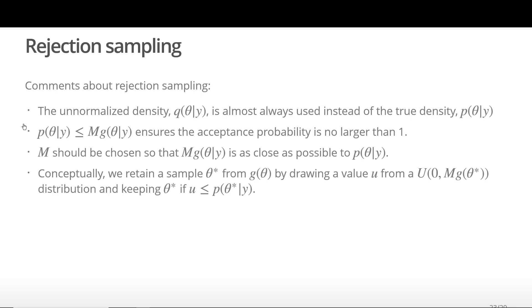When thinking about how to make the decision about whether a sample value theta star drawn from G should be retained, we draw a value U from a uniform (0, Mg(theta star)) distribution and keep theta star if U is less than or equal to the target density evaluated at theta star.